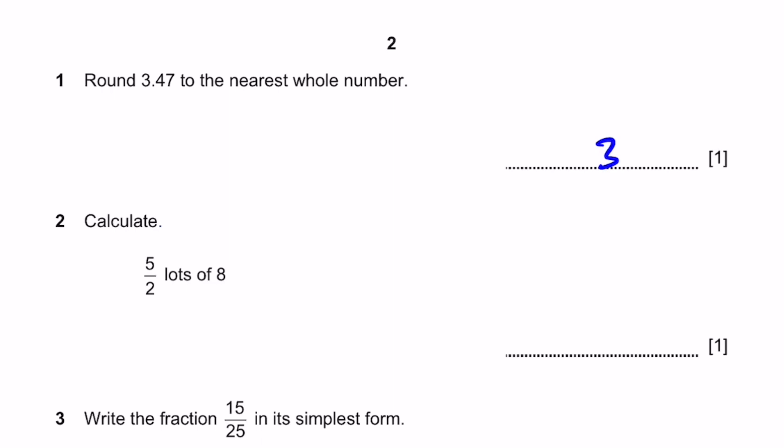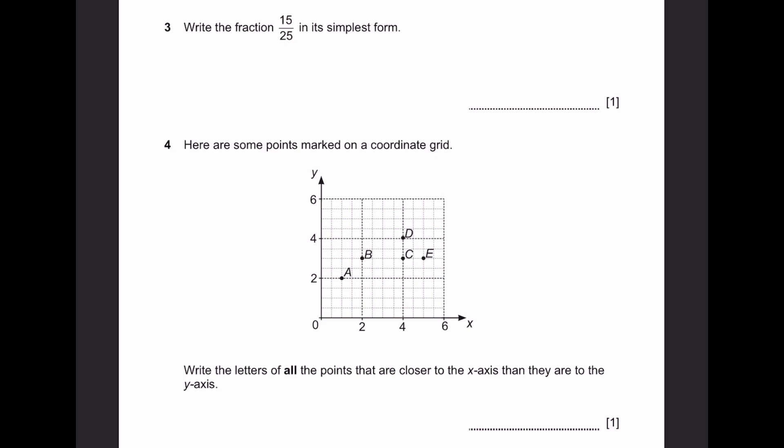Question 2, calculate 5 by 2 lots of 8. That's simply 5 by 2 times 8 which is 20. Question 3, write the fraction 15 by 25 in its simplest form. That will be dividing both sides by 5 to get 3 by 5.